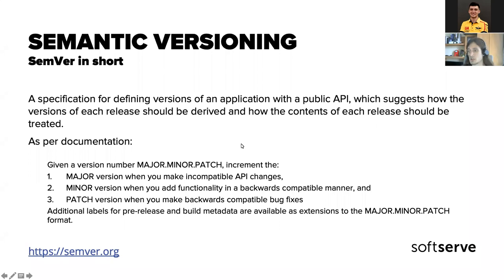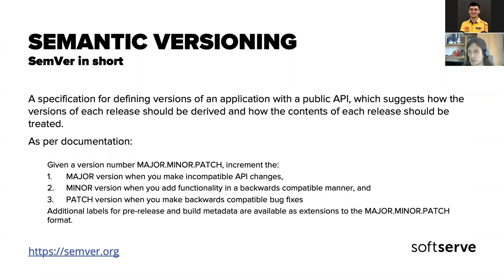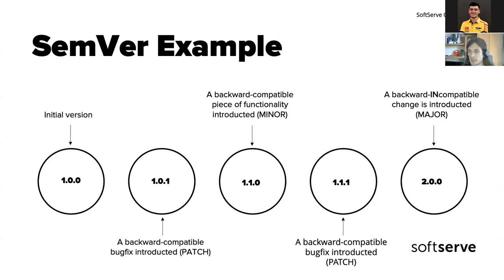Basically, anything that would prevent users from carrying on normally using your application or library causes a major bump. The minor version increments when adding functionality that does not break any previous functionality. The patch — the last one — is for small fixes or refactoring. There is also the ability in the specification to add pre-releases as postfixes and build metadata. The most basic example would be if you are already on version 1.0.0.